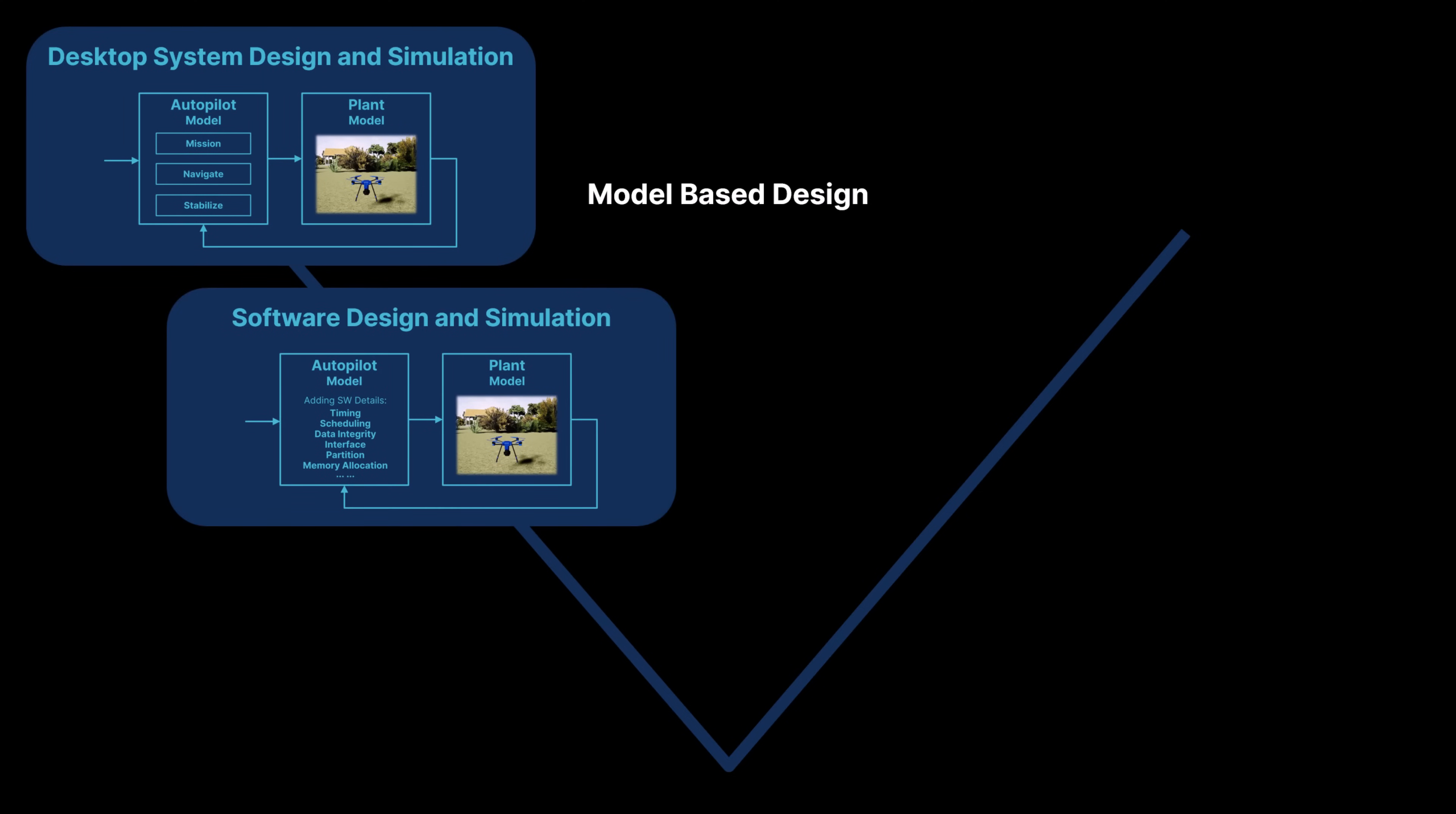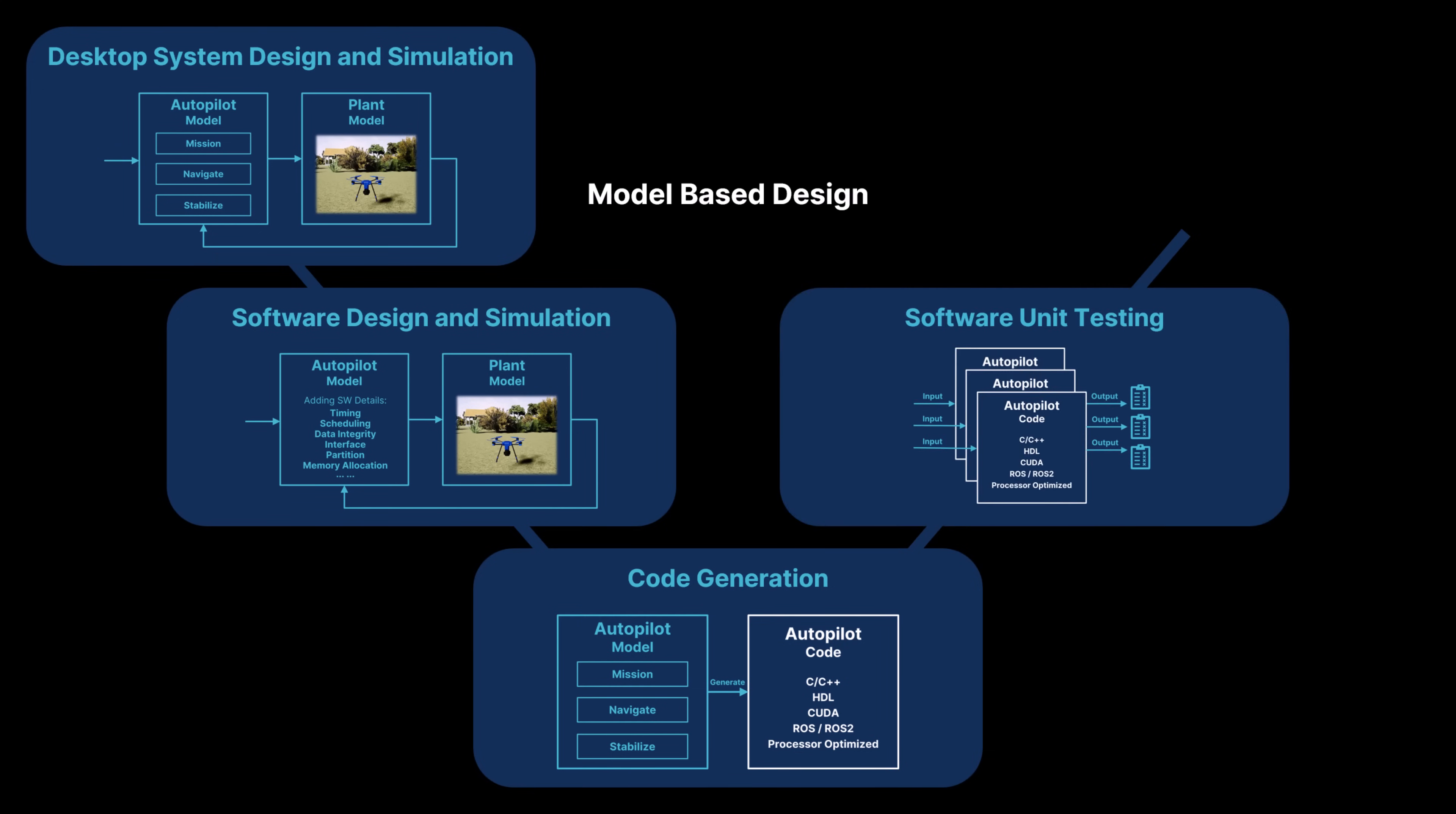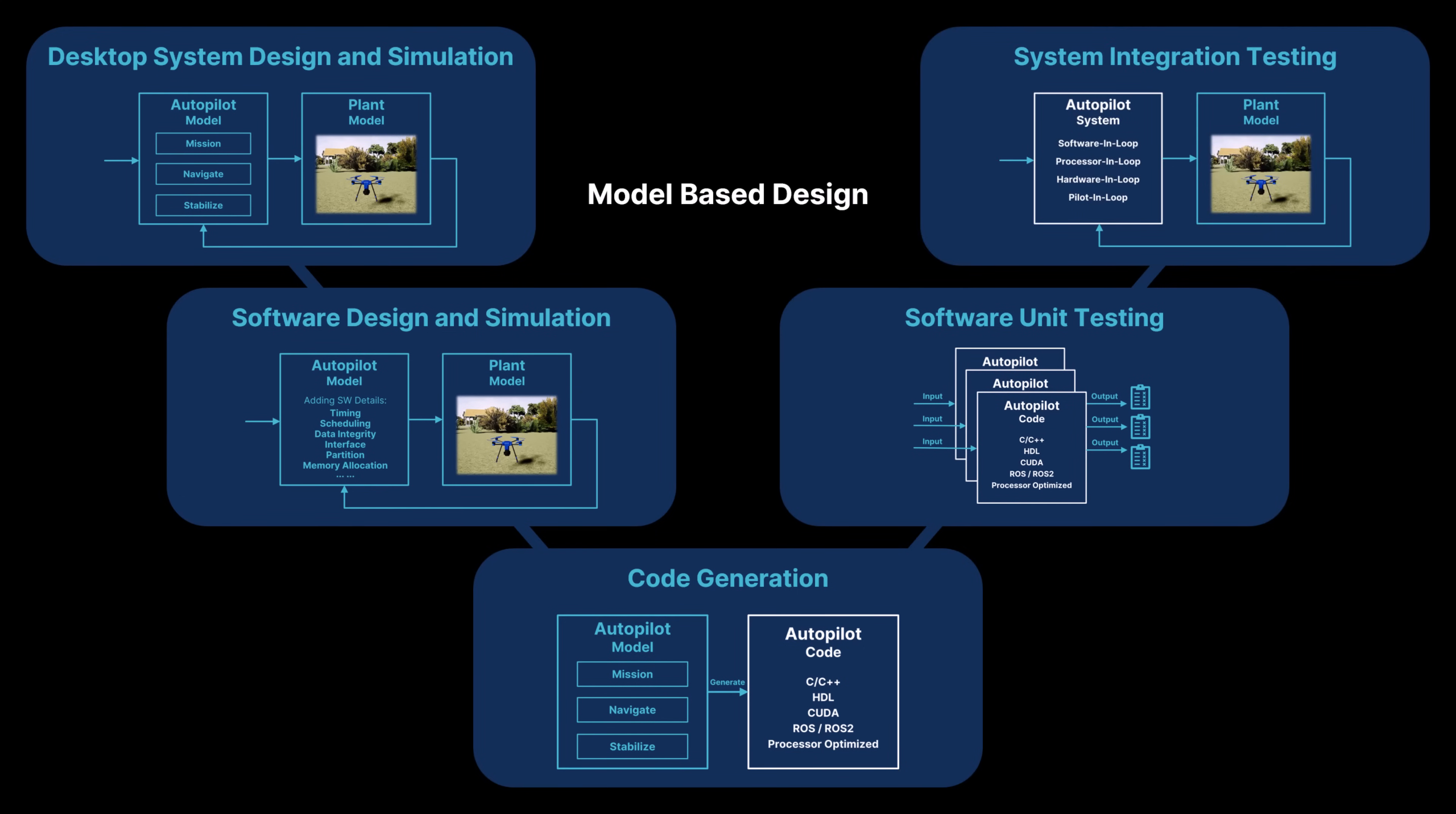Software design and simulation, which adds embedded software design details. Code generation. The generated code can be deployed directly to embedded platforms, or middleware such as ROS2. Software unit testing, which ensures each individual software component functions correctly before system integration. System integration testing. At this final stage, the complete software is integrated with hardware and tested in real-world scenarios.